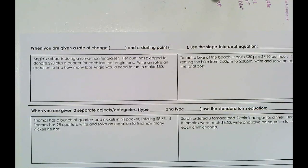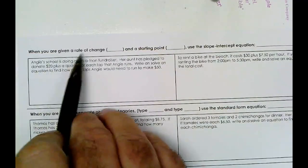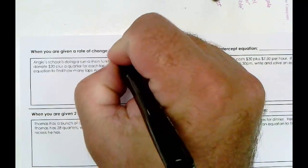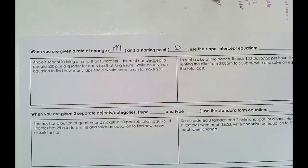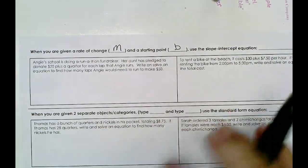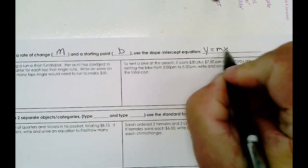Today we're going to be talking about writing equations from word problems, and what form of the linear equation is going to be best for us to use in order to solve what we're being asked for. When you are given a rate of change, or the slope, and a starting point, or the y-intercept, the easiest thing is, obviously, if you're given the slope and the y-intercept, use the slope-intercept equation: y is equal to mx plus b.